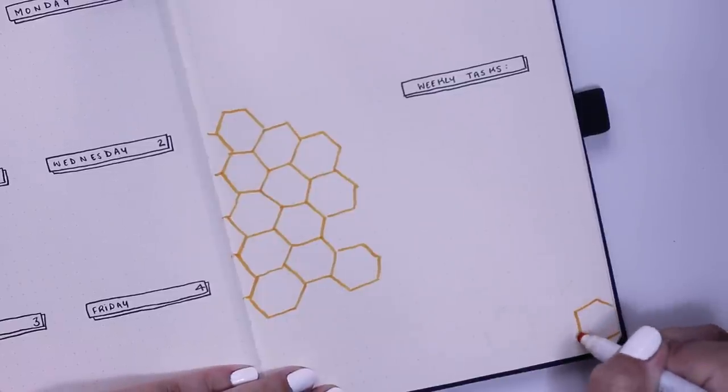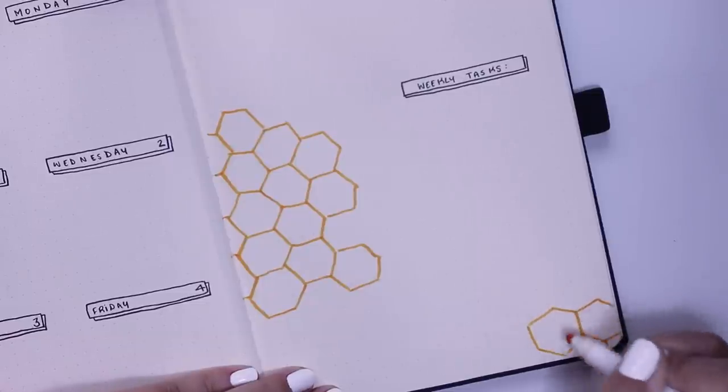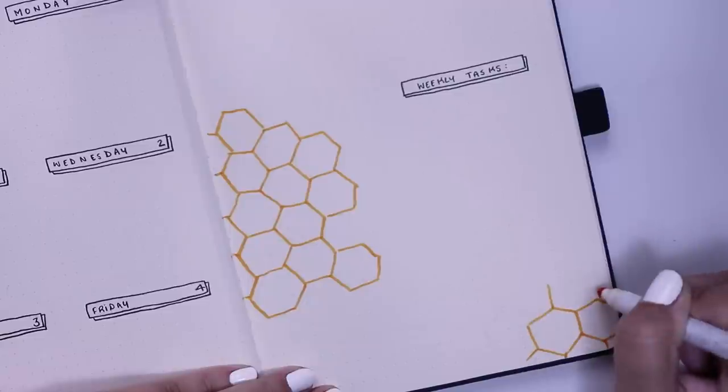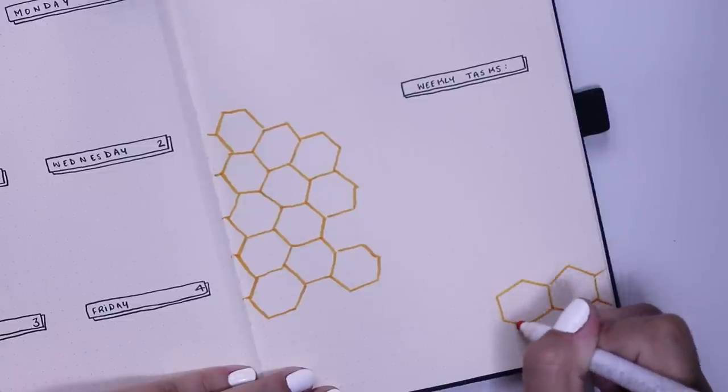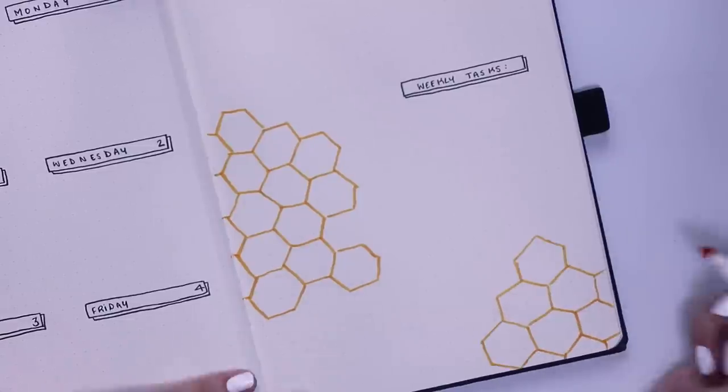I also added a little rectangle there on the bottom right of the double spread where I'm going to write in my weekly tasks. I always need a weekly tasks area in my weekly spreads because boy, do I have a lot of weekly tasks.